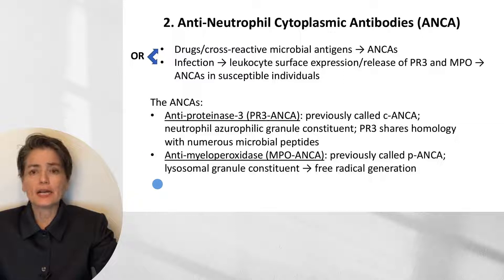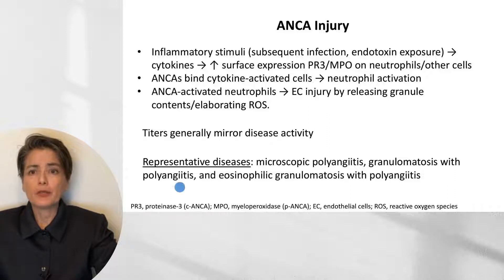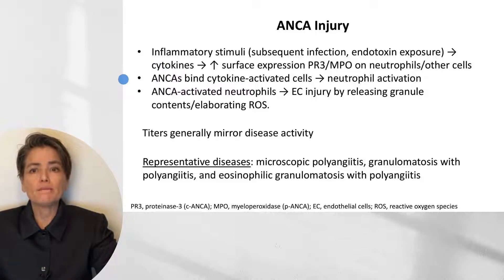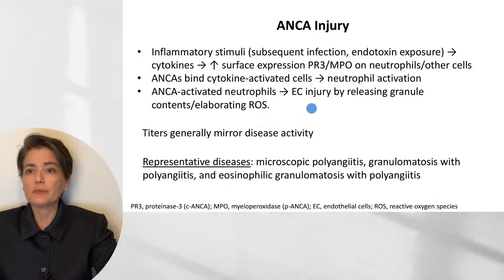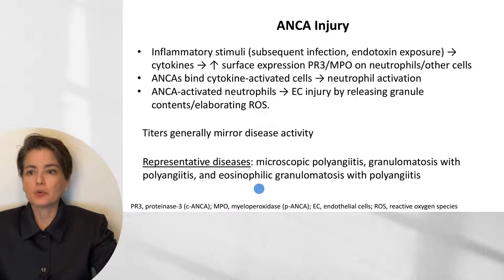We can also get antimyeloperoxidase ANCA, previously called P-ANCA, which is a lysosomal granule constituent involved in free radical generation. Once ANCAs are generated, injury occurs through an inflammatory stimulus — such as a subsequent infection or endotoxin exposure — that releases cytokines, increasing surface expression of PR3 and MPO on neutrophils. These ANCAs then bind cytokine-activated cells, leading to neutrophil activation; ANCA-activated neutrophils cause endothelial cell injury by releasing granule contents and reactive oxygen species. ANCA titers generally mirror disease activity. Representative diseases include microscopic polyangiitis, granulomatosis with polyangiitis, and eosinophilic granulomatosis with polyangiitis.